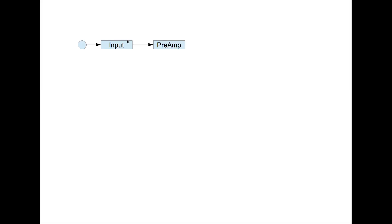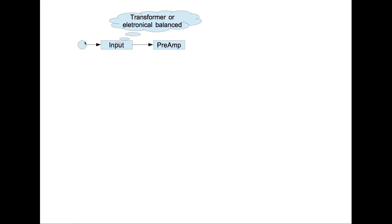Let's start with a blank piece of paper and imagine we have an input signal — maybe from your tape machine or a microphone — and it goes to the mixer input. The mixer input typically is an input transformer or some kind of electronic balancing, and this goes to our preamp, which is a tube or transistor that amplifies the input signals.